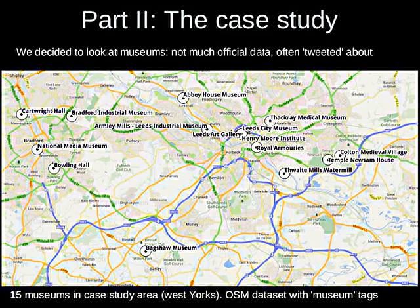Moving on to part two, the case study. We harvested tweets from roughly the area represented on the map — about 200 square kilometres. The question I was brought in to look at when I started at Leeds in October was: we've got this database of all geographically tagged tweets, but what can this tell us about the movement of people to and from entertainment facilities, specifically museums? The starting point was to identify the museums of interest. I used the OpenStreetMap dataset — itself volunteered geographical information — to identify and verify 15 major museums in the area, which are plotted on the map.